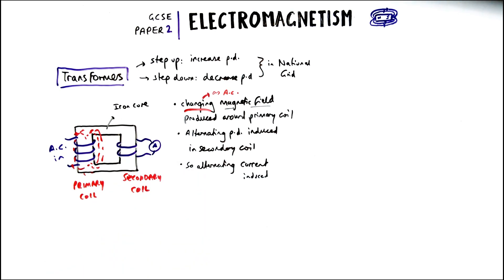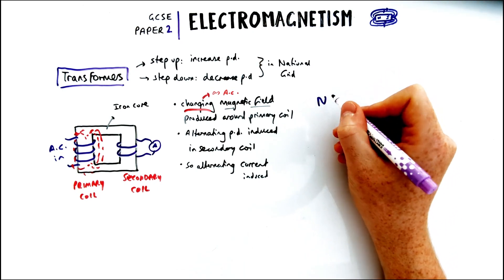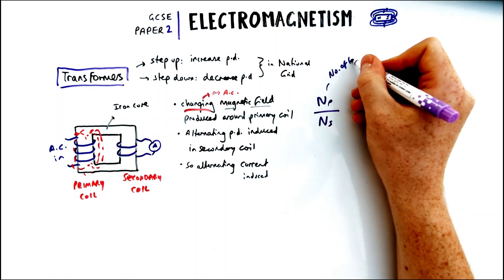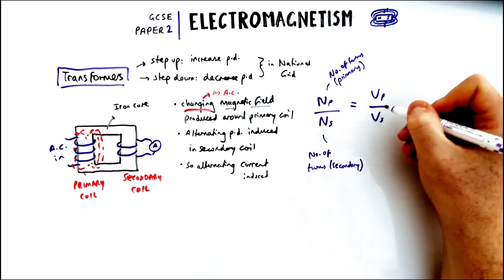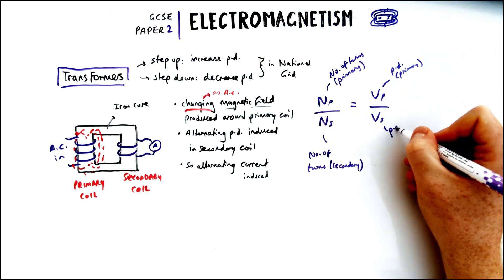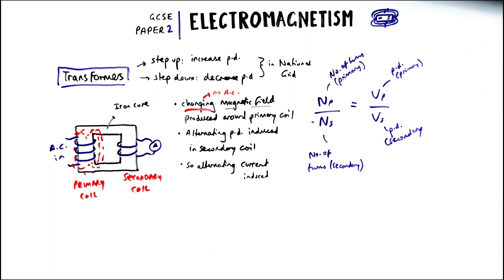The number of coils on the primary versus secondary can be different depending on whether it's a step-up or step-down transformer. The equation that governs this is: the ratio of turns on the primary coil over turns on the secondary coil equals the ratio of potential difference on the primary over potential difference on the secondary. So if there are fewer turns on the secondary coil, the PD goes down by the same factor — that's a step-down transformer.